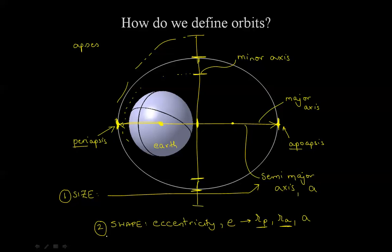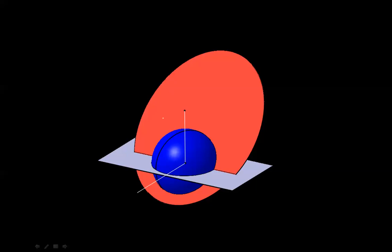We have defined the size and the shape. Now we need to understand how this orbit is oriented around the Earth. In this 3D image, the blue Earth has two axes going through its center: one through the north and south poles — the north-south pole axis — and another seemingly arbitrary axis that points to the vernal equinox. The gray plane here passes through the equator of the Earth and is known as the equatorial plane.